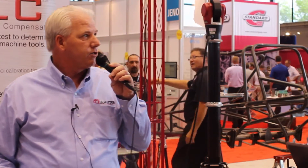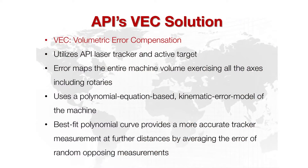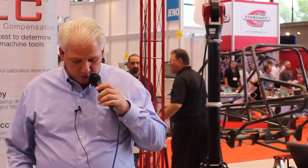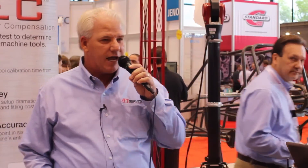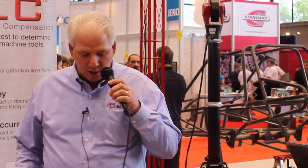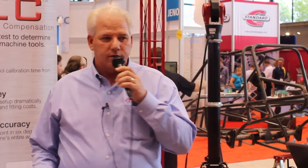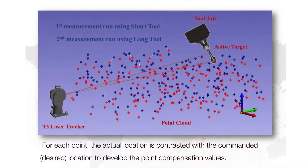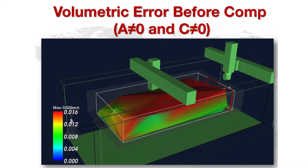VEC utilizes our laser tracker and active target to error-map the entire volume. What's different about this kinematic model versus robotic calibration is it uses a polynomial-based equation — essentially a best-fit curve for each axis — where the variables are the position of the machine once input into the controller. We also use a long tool/short tool measurement to depict the angular errors for the rotaries by creating a vector and comparing it to the design vector.